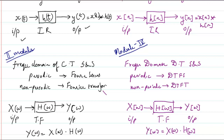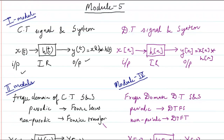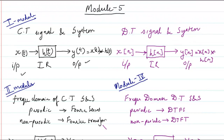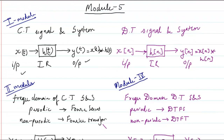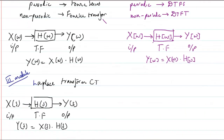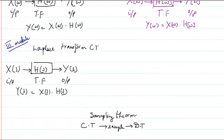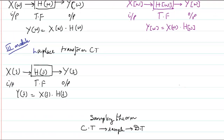Just as in the continuous time case, where the output Y[n] was the convolution sum of x[n] with h[n], here in the discrete time frequency domain we have Y(ω) = X(ω)·H(ω). You should note that for the discrete case we use square brackets. So parallelly, we have defined the frequency domain representation for both continuous time and discrete time signals.